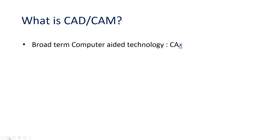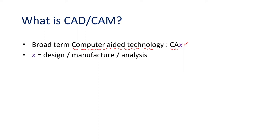Let us study what is meant by CAD. CAD is basically a term associated with computer-aided technology — CA of X, meaning computer-aided of something. X can be design, manufacture, or analysis. So we get computer-aided design, computer-aided manufacturing, or computer-aided analysis or engineering.